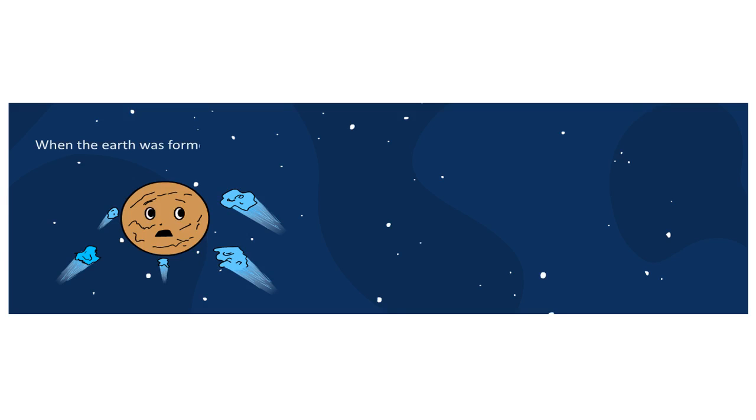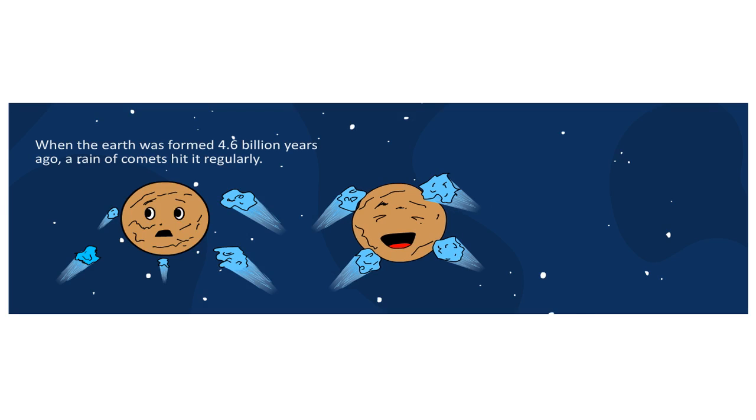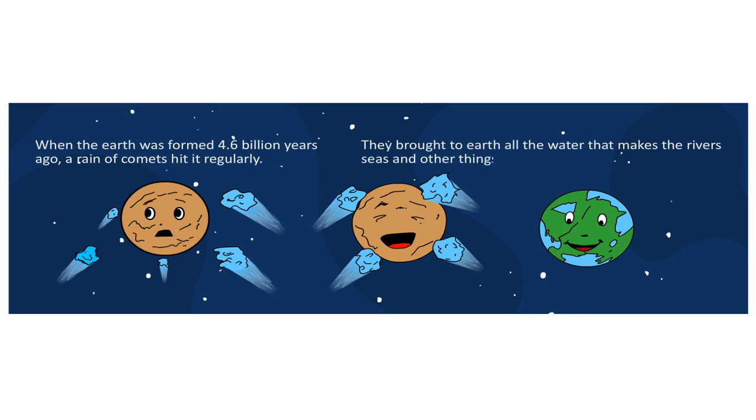When the Earth was formed 4.6 billion years ago, a rain of comets hit it regularly. They brought to Earth all the water that makes the rivers and seas and other things that helped make life on Earth.